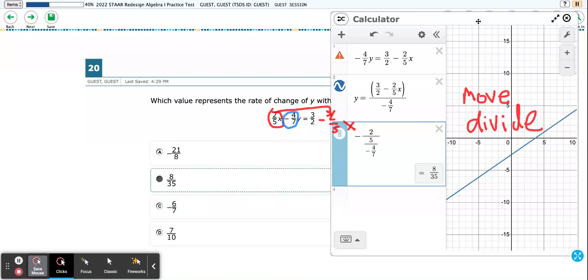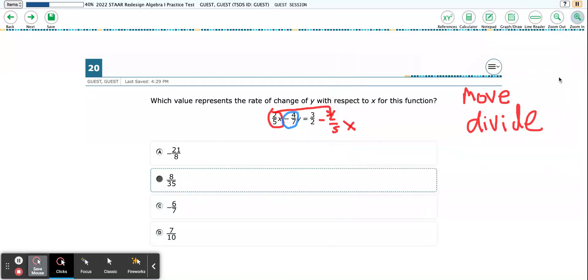So remember to move and divide, use your calculator to do the division and then bring out slope and use the click on and click off to change your decimal to a fraction and choose the correct answer. Good job. You're going to get a master's.